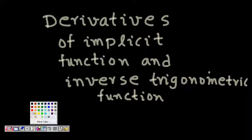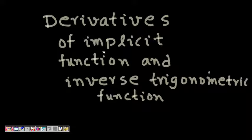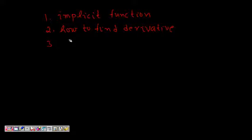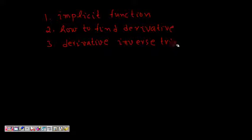In this lecture, we will learn about finding derivatives of implicit functions and of inverse trigonometric functions. We will first understand what an implicit function is, then how to find the derivative of an implicit function, and third, how to find the derivative of an inverse trigonometric function. This forms the summary of the lecture.